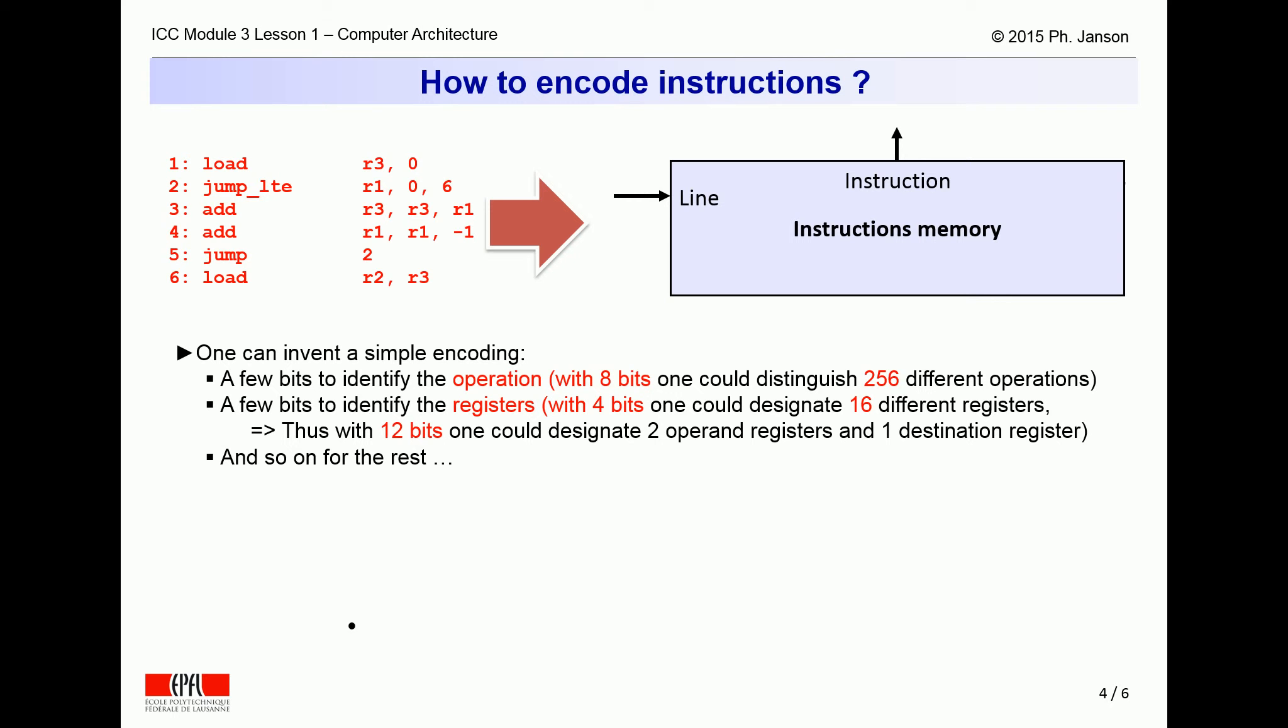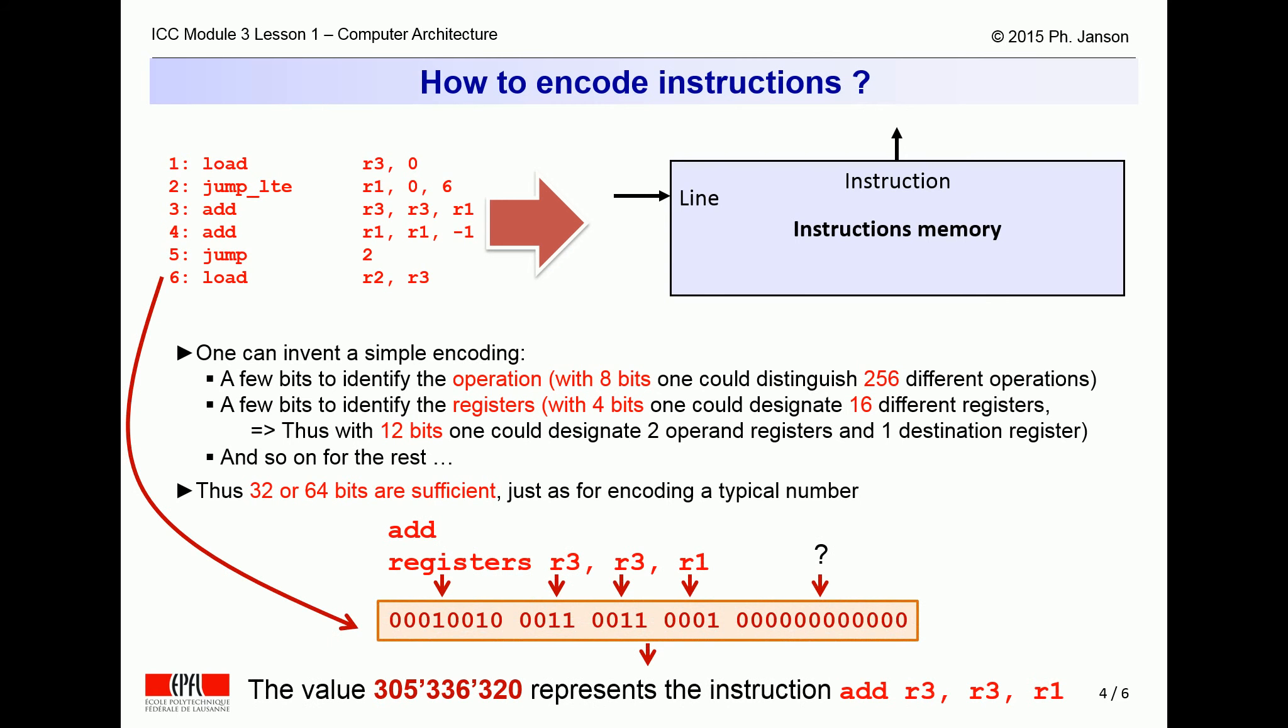All this still leaves enough free bits to encode numbers to be loaded into registers. In summary, 32 or 64 bits are plenty enough to fully identify one among hundreds of instructions, together with its target result register and its operands, whether they be registers or given numbers.